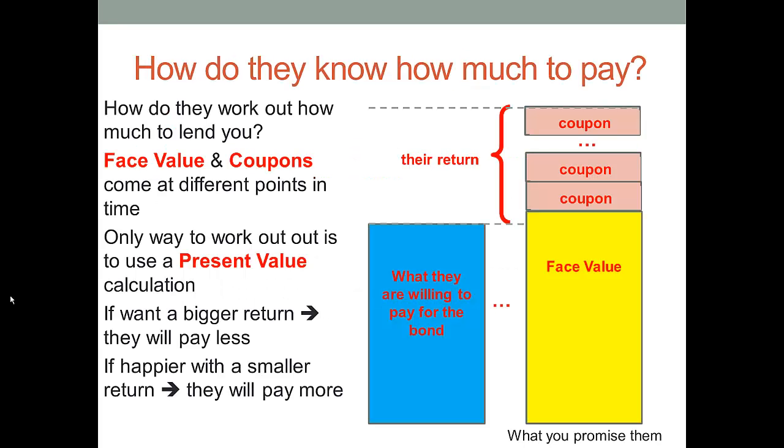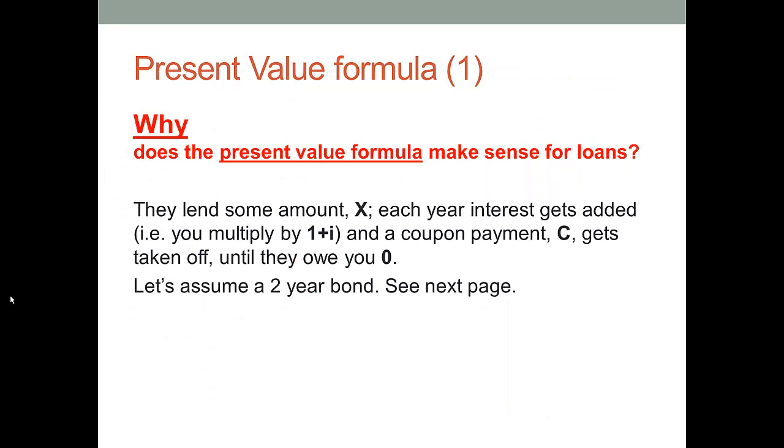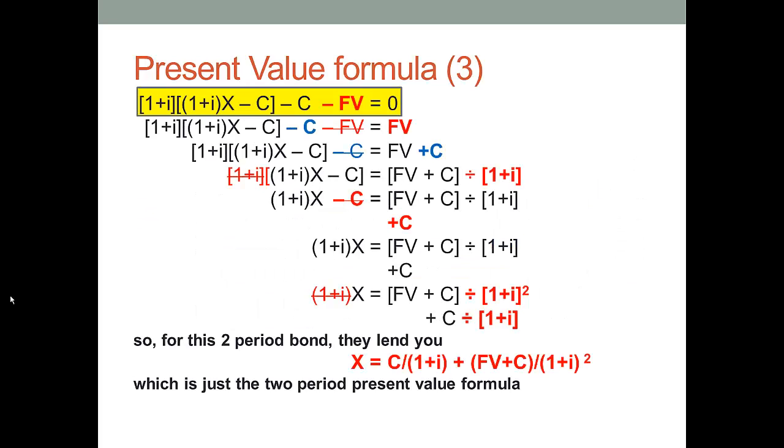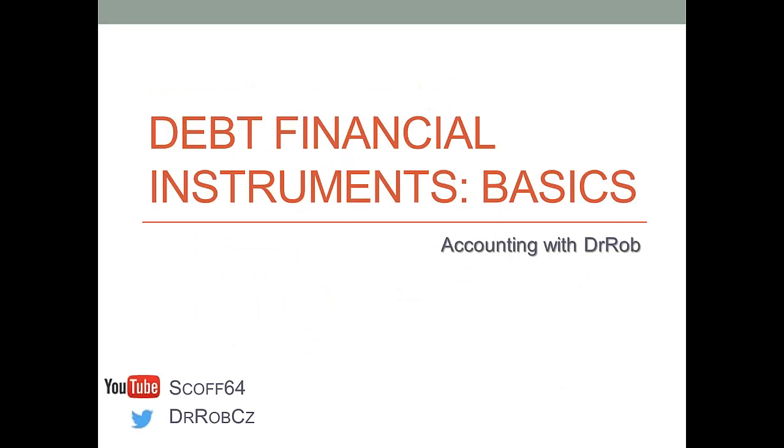So let's just go back a few slides. What are they willing to pay for the bond? How do they work that out? They take the present value of everything you promised them. And if the interest rate that they, if the rate of return they want is bigger, that's going to involve the present value being discounted more. So they're going to give you less money. Right? They can't control what you give them back. All they can control is what they give you. And the difference is the return. So to get a bigger return, they offer you less money. To get a smaller return, they're happy to offer you more money. I hope that makes it make some sense. Okay. That's enough from me on this topic.